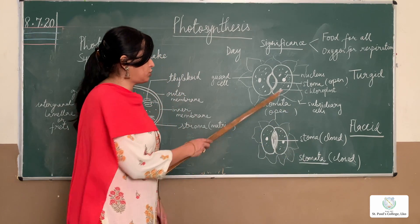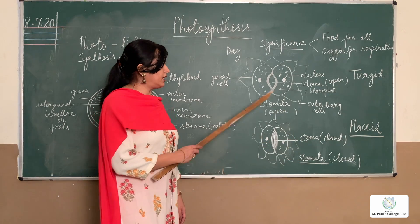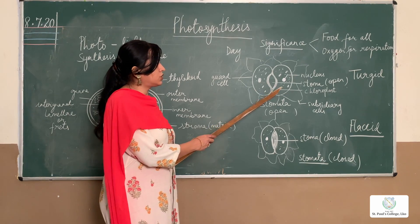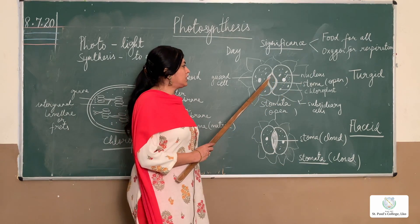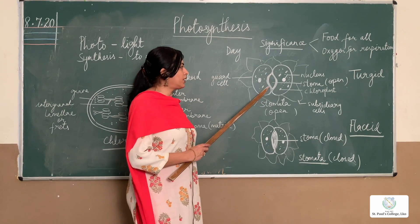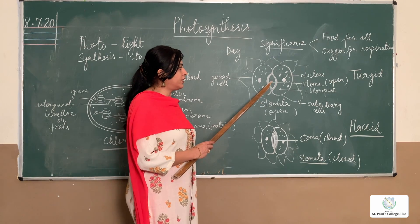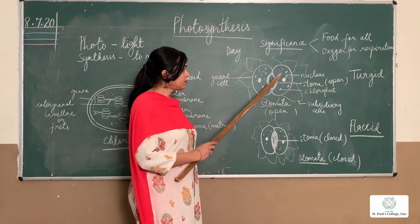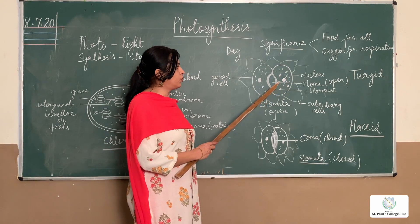Here is the structure of stomata and how it appears during day and night. Each stomata consists of a pair of bean-shaped cells called guard cells. Each guard cell has an inner thick wall — the concave wall is thick — and the outer wall is thin. The opening between them is called the stoma. Each guard cell has a nucleus, lots of chloroplasts, and is filled with cytoplasm.